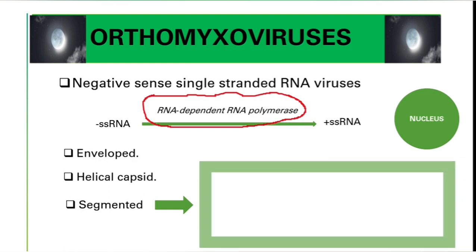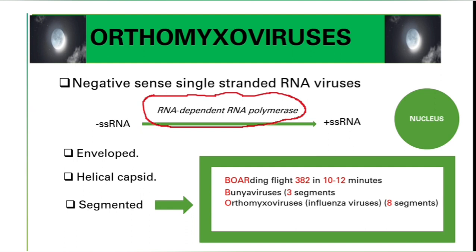Influenza viruses are segmented. To remember all the segmented viruses, use this mnemonic: 'Boarding flight 382 in 10 to 12 minutes.' B for Bunya viruses — they have 3 segments; flight for the myxo viruses (influenza) — 8 segments; 3 for Arena viruses — 2 segments; and 10 to 12 for Reo viruses — 10 to 12 segments.